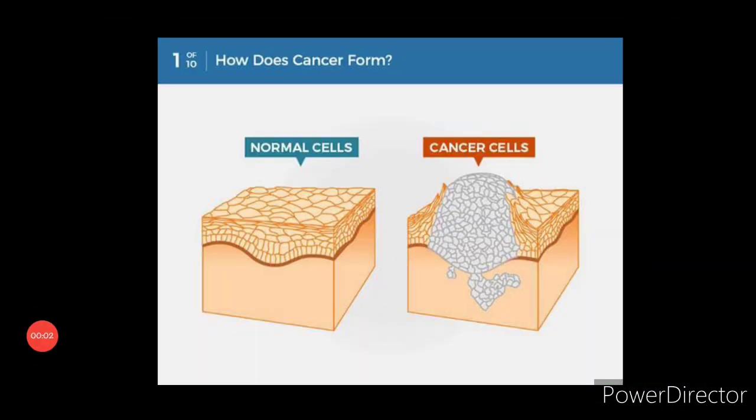Cancer cells, by definition, proliferate in defiance of normal control and are able to invade and colonize surrounding tissues—that is, they are malignant. By giving rise to secondary tumors or metastases, they become difficult to eradicate surgically.